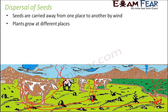So dispersal of seeds helps plants to be grown at different places — that is how greenery increases. We need plants everywhere because without plants, the balance of oxygen and carbon dioxide in the atmosphere will get disturbed. Seed dispersal happens as a result of wind, because seeds are not very heavy and wind can carry them from one place to another.